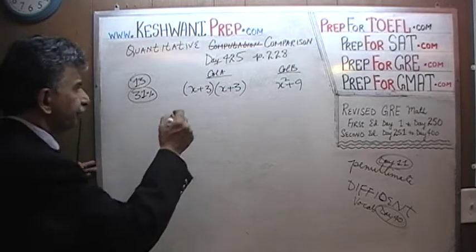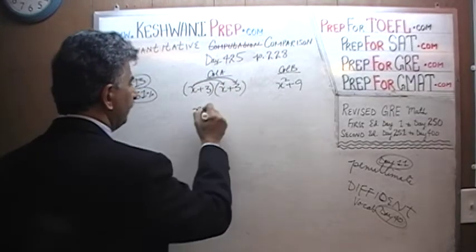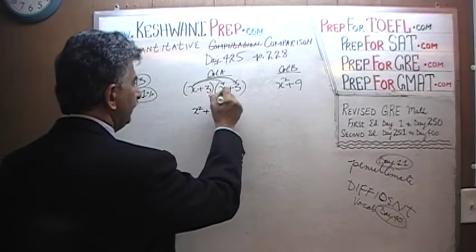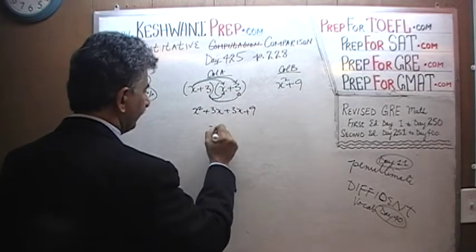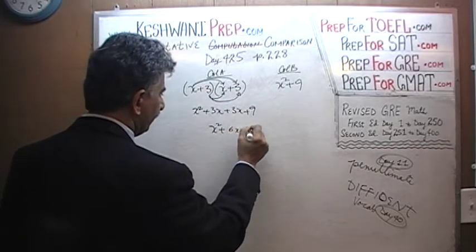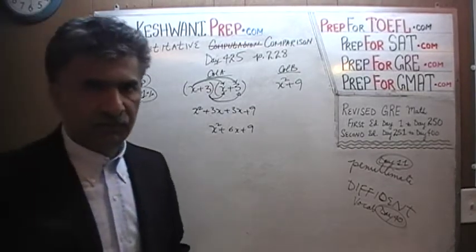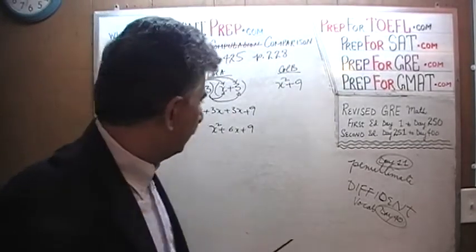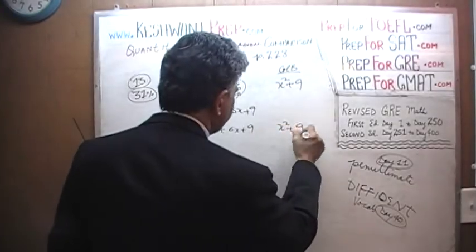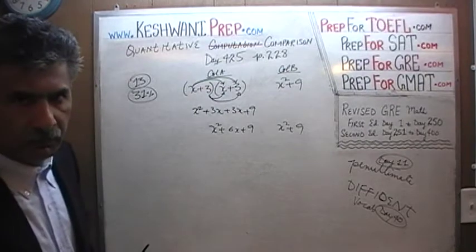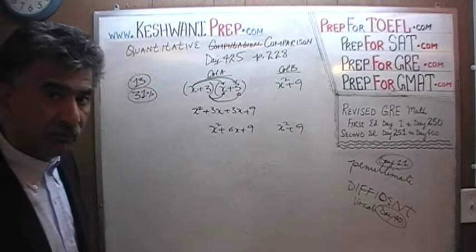Let's get going. x times x is just x squared. x times 3 would be 3x, and 3 times x would be 3x, and 3 times 3 would be 9. Which is simply x squared plus 6x plus 9. Of course — it's simply (A plus B) whole squared: A squared plus 2AB plus B squared. And here we have x squared plus 9. We see x squared on this side and x squared on that column.